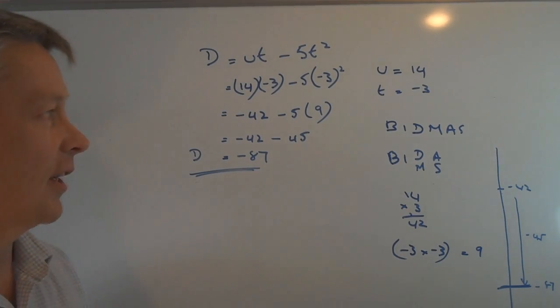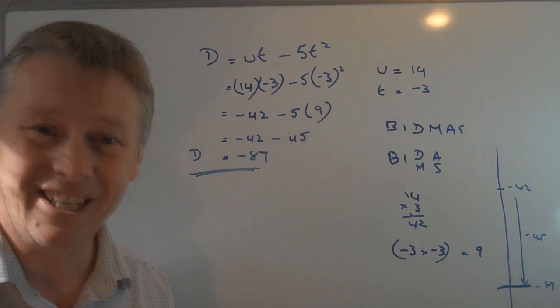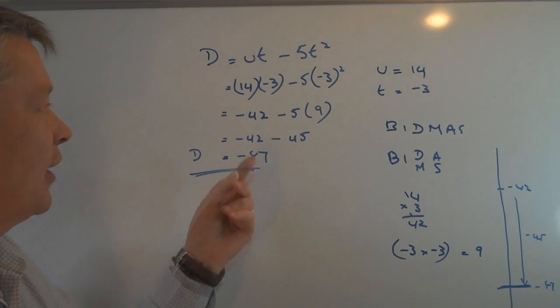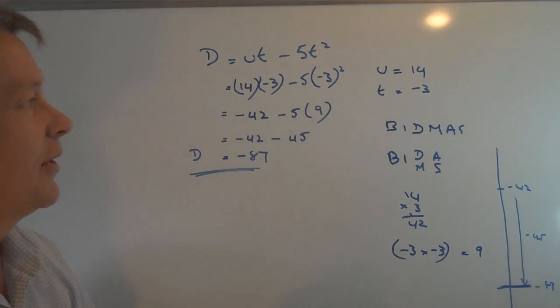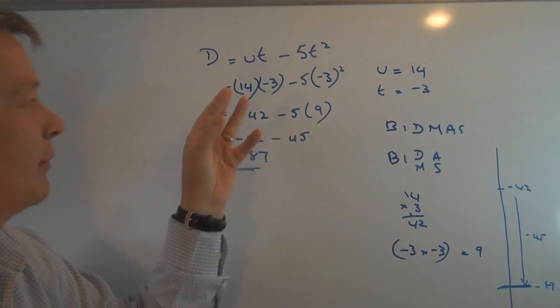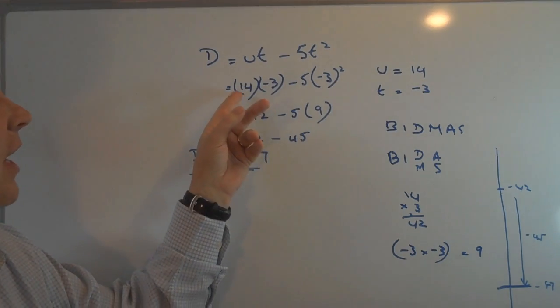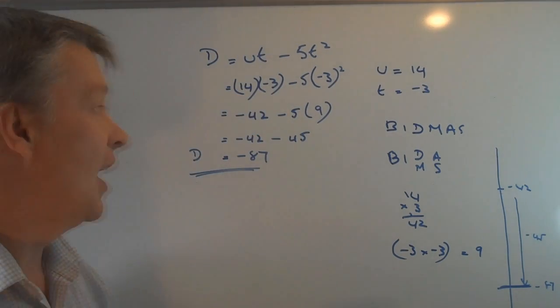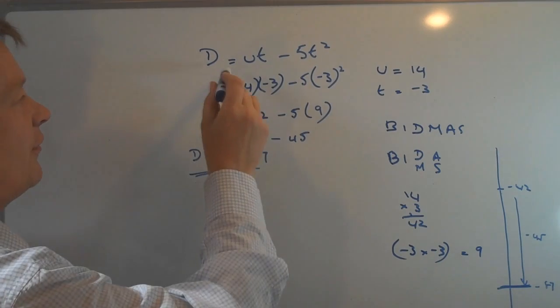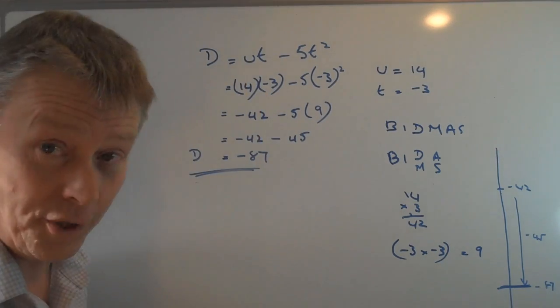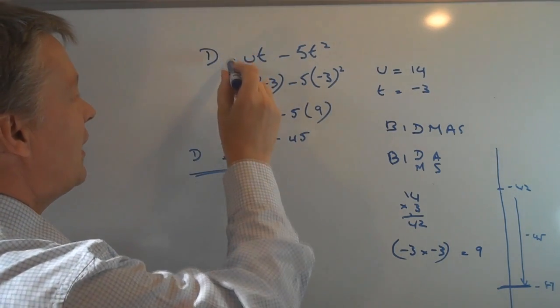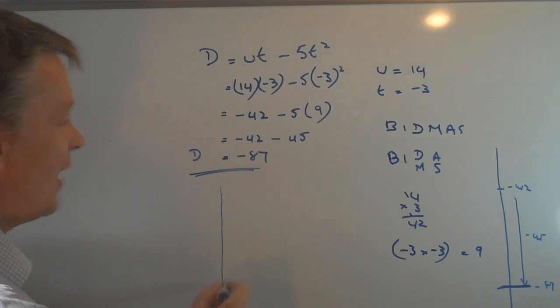So this would be something like a grade C, grade D question. It's relatively straightforward providing you make sure that you do things in accordance with BIDMAS and also keep things in brackets. And it's also very useful like it is in all algebra to keep the equals sign straight down the page if you can.